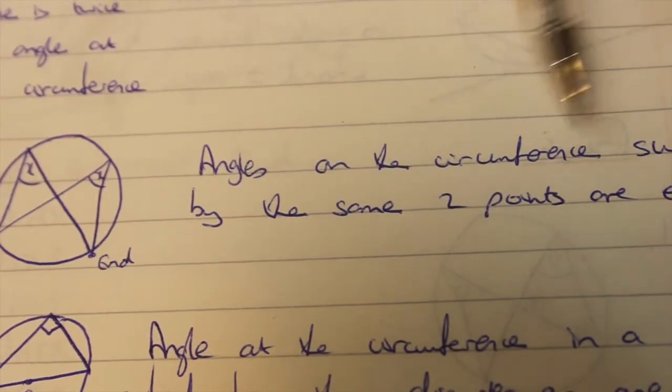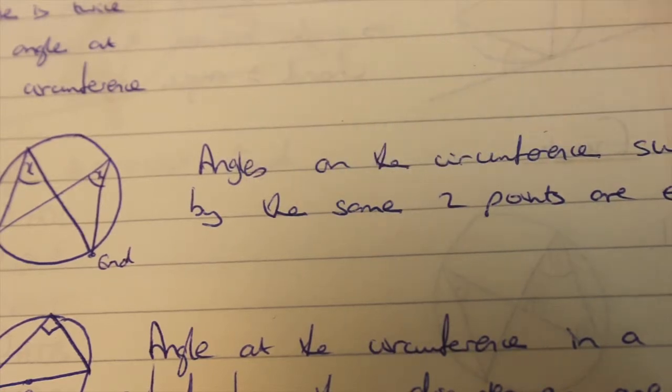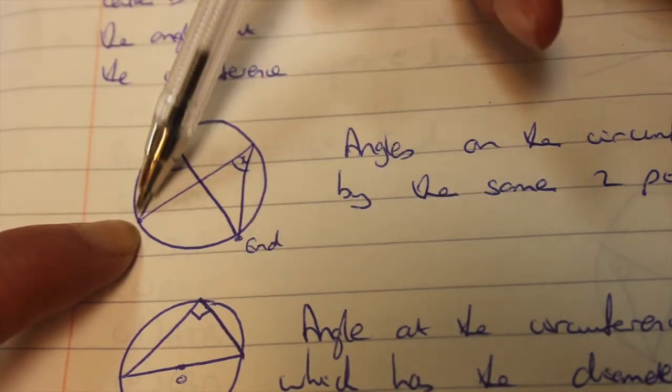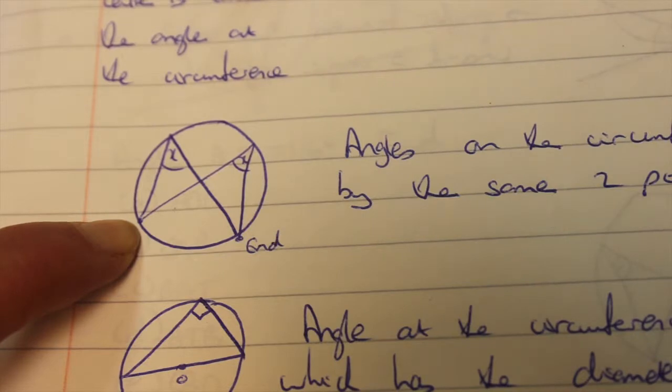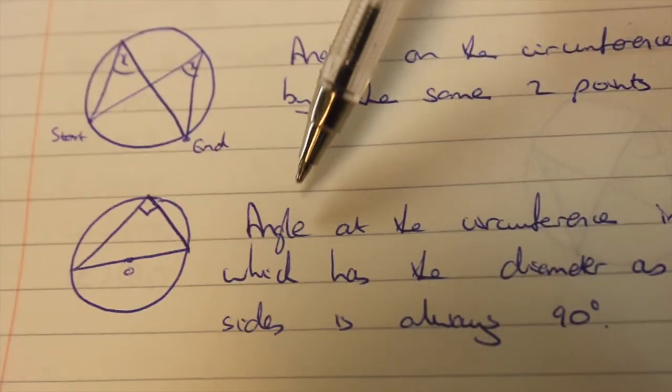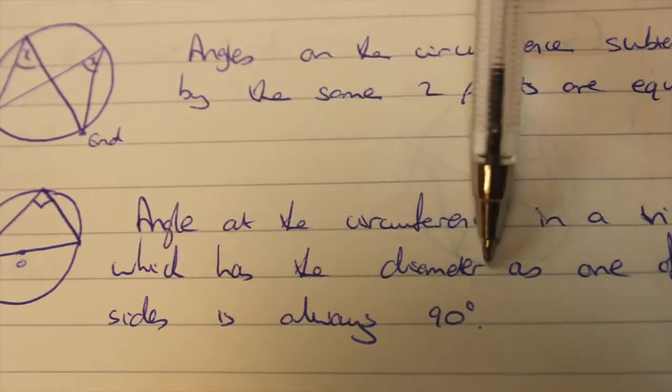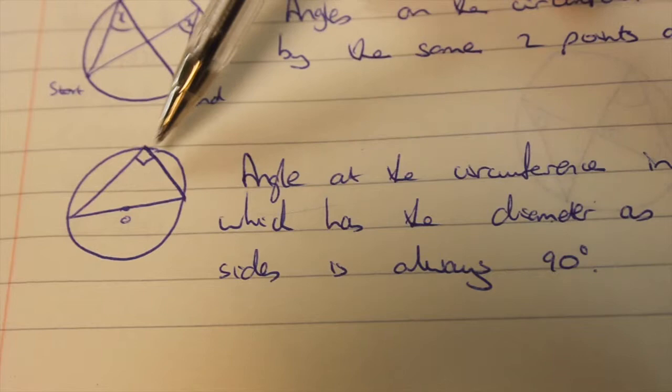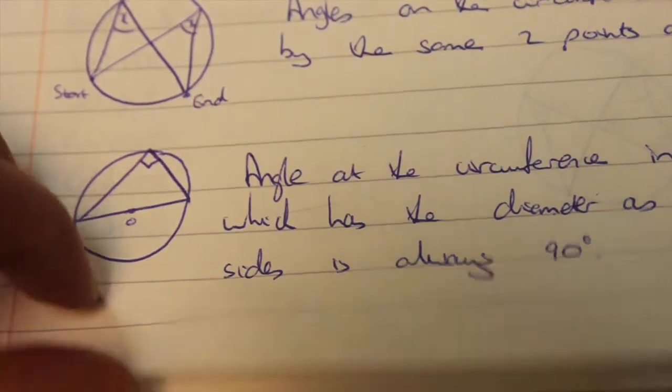Angles on the circumference subtended by the same two points are equal. Basically what that means if you start and finish at the same point and go to the edge those angles are equal. The angle at the circumference in a triangle which has a diameter as one of its sides is always 90 degrees but that line must be the diameter for that to be 90 degrees.